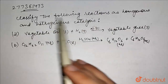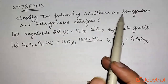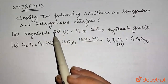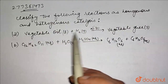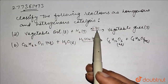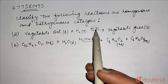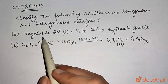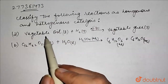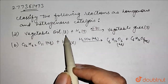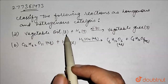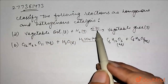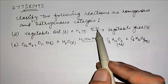Our question is: classify the following reaction as homogeneous and heterogeneous catalyst. The first reaction is vegetable oil reacts with hydrogen in the presence of nickel catalyst, and it gives vegetable ghee. In this reaction, vegetable oil is a liquid, hydrogen is a gas, and the catalyst nickel is a solid.